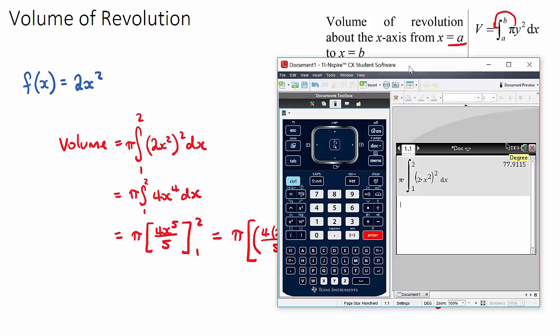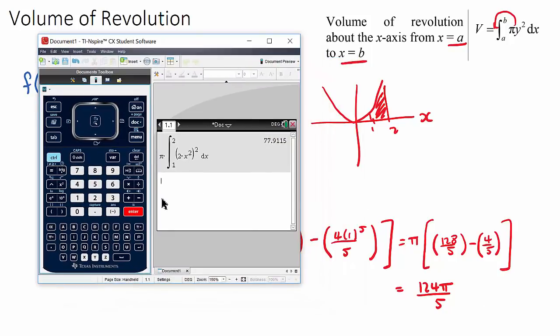So 77.9 will be our volume. That will be the same as this hopefully. I'll just check. We do 124 multiplied by pi over 5. It's the same volume. So this would be the decimal answer. This here would be the fraction answer.